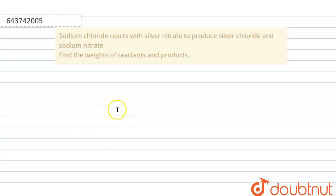We have sodium chloride reacting with silver nitrate to produce silver chloride and sodium nitrate. We have to find the weights of the reactants and products. So how do we start or how do we proceed?